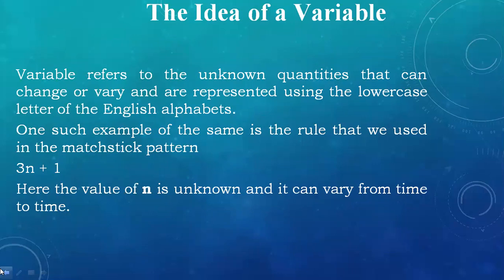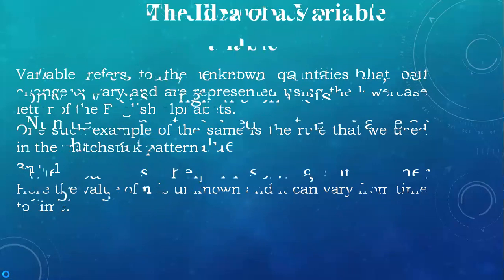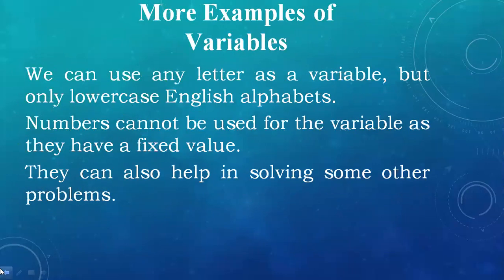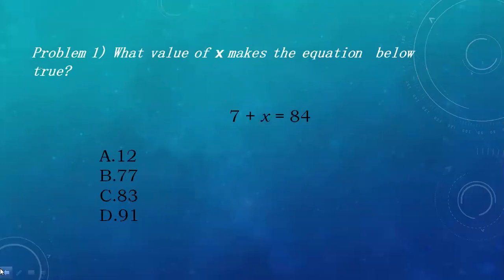What is a variable? The variable refers to an unknown quantity that can change or vary and is represented using lowercase letters of the English alphabet. One example is the rule we used in the matchstick pattern, 3n plus 1. Here n is unknown and can vary, so it is our variable. The basic rules are: we can use any letter as a variable but only in lowercase. A number cannot be used as a variable as they have fixed values. Variables are always in lowercase.